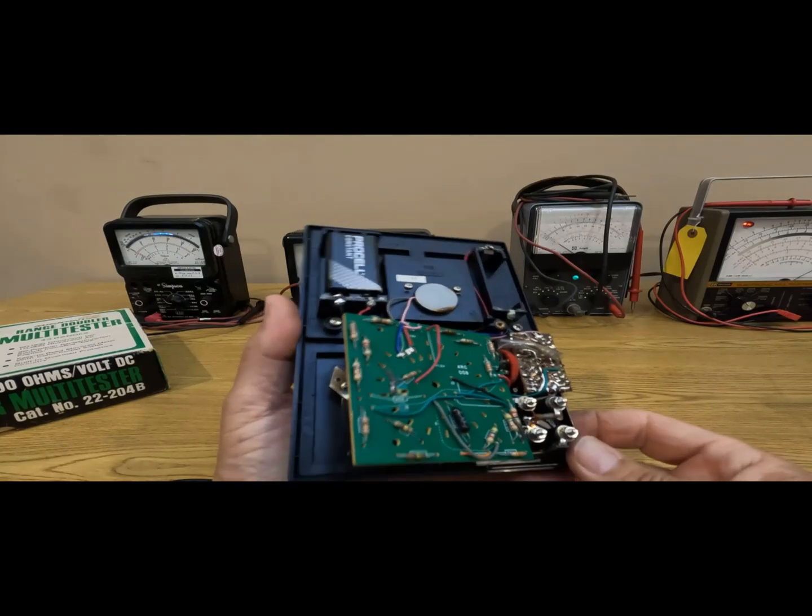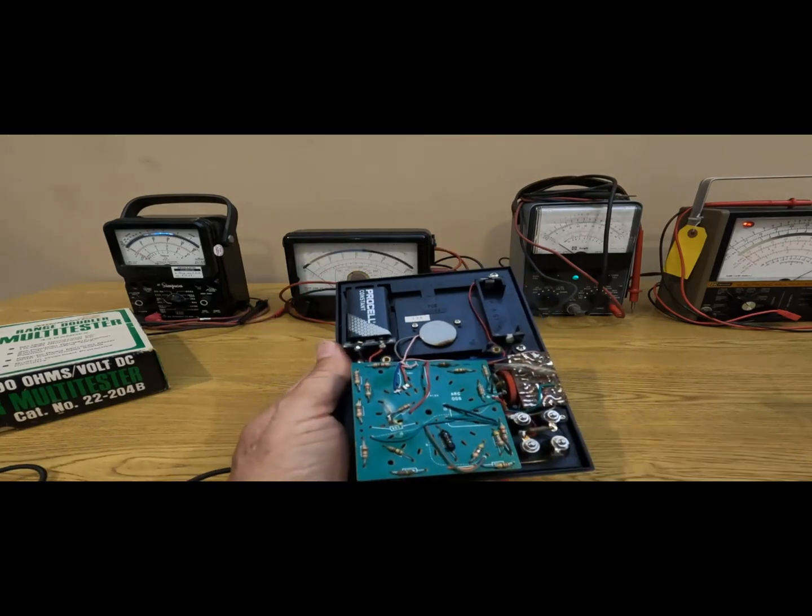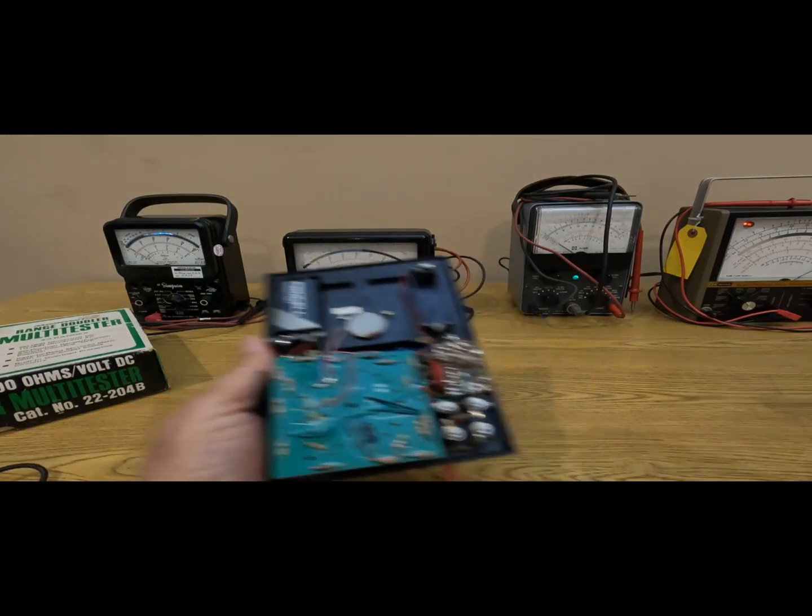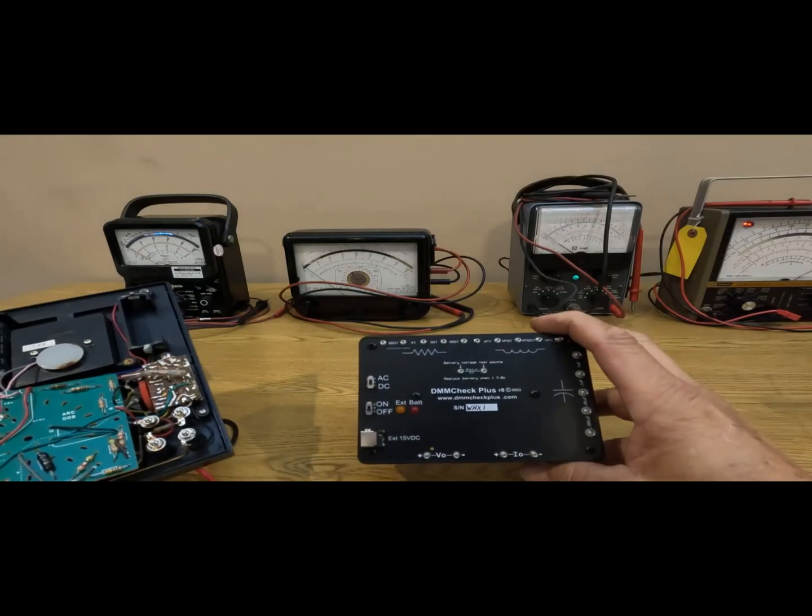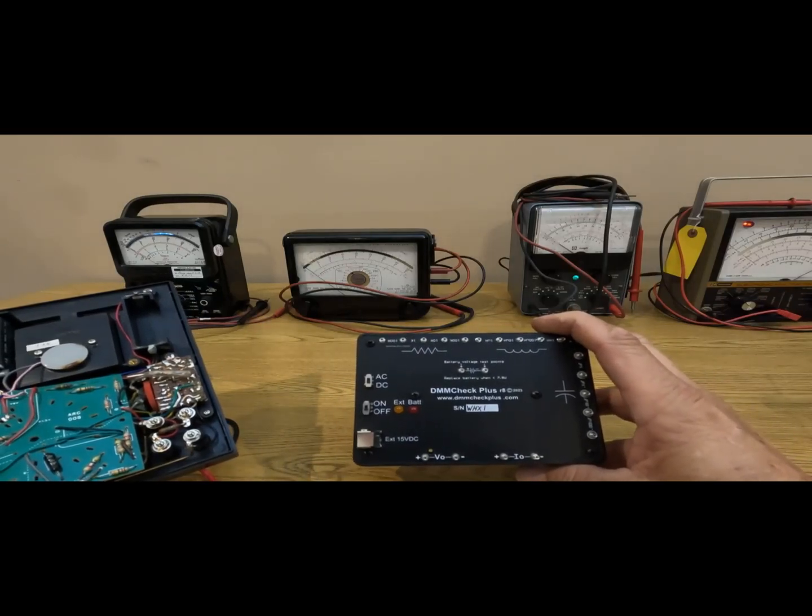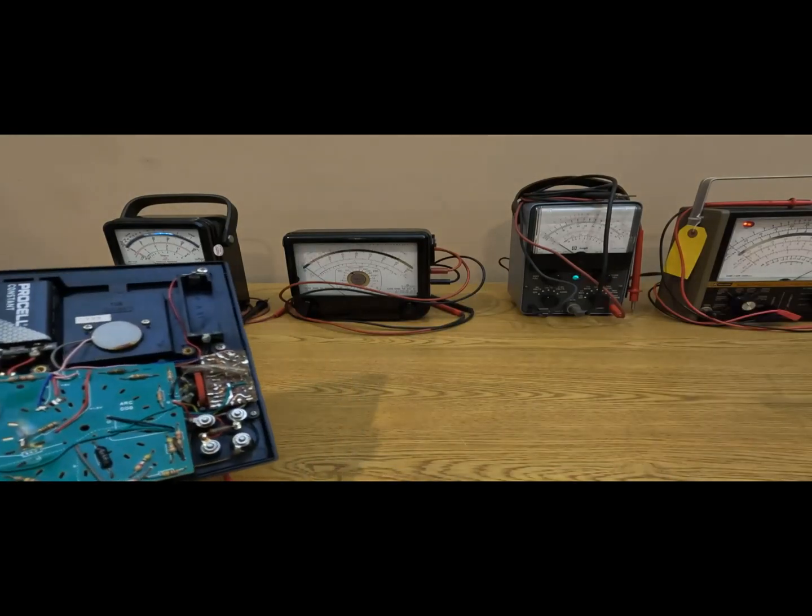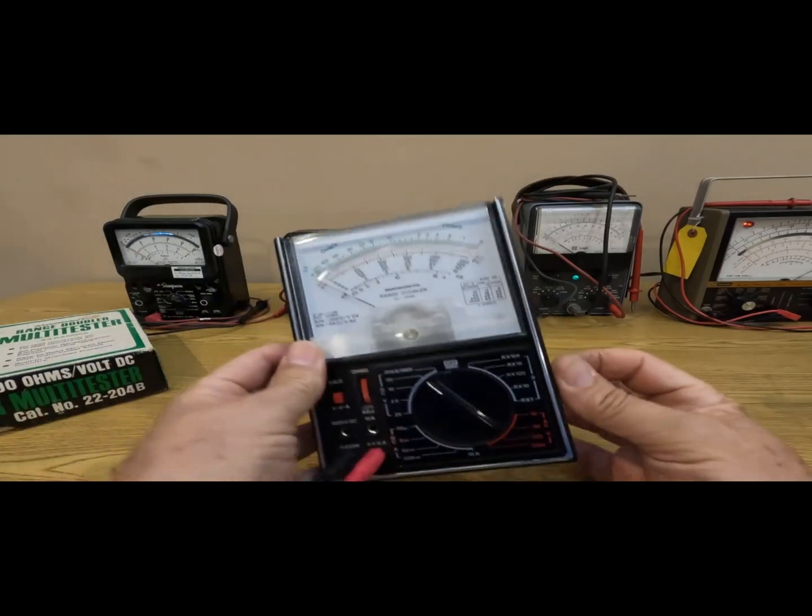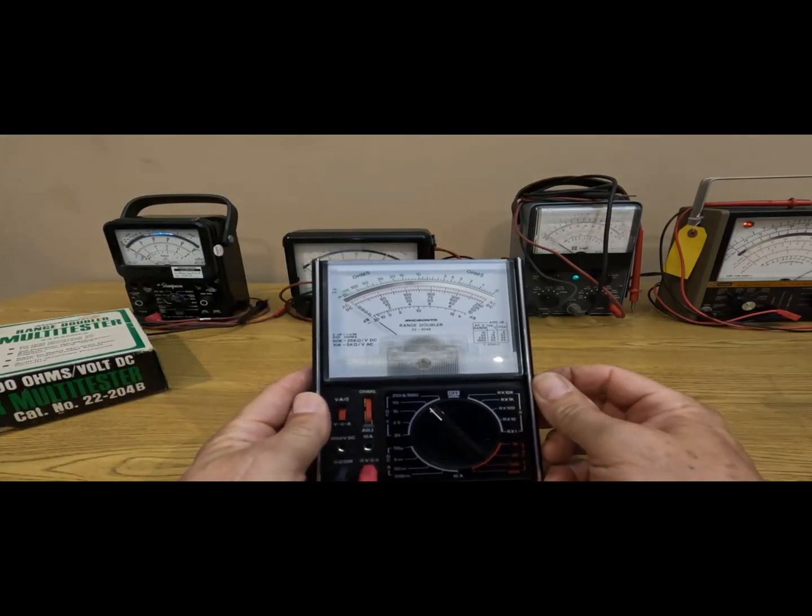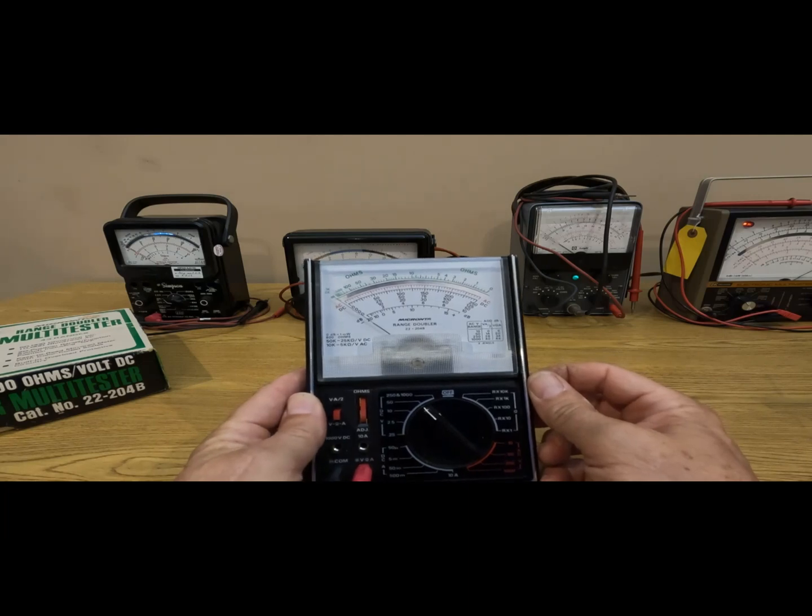All right, back to this guy. So I'll fix this, put it back together, and we will have a DMM check plus rev 8 high stability model versus the 1983 Radio Shack Micronta multimeter.